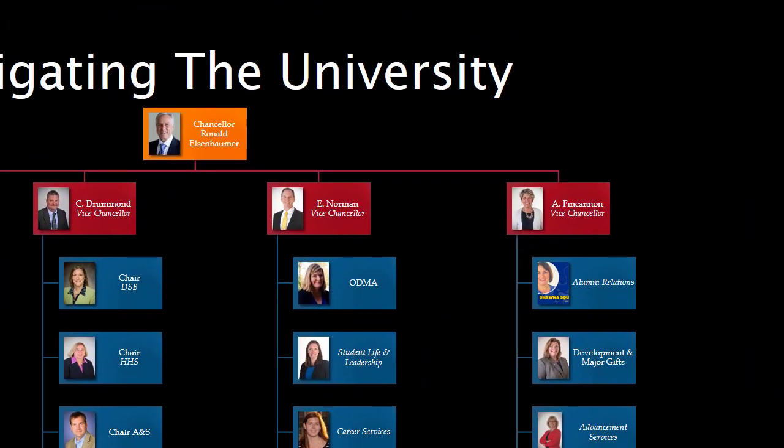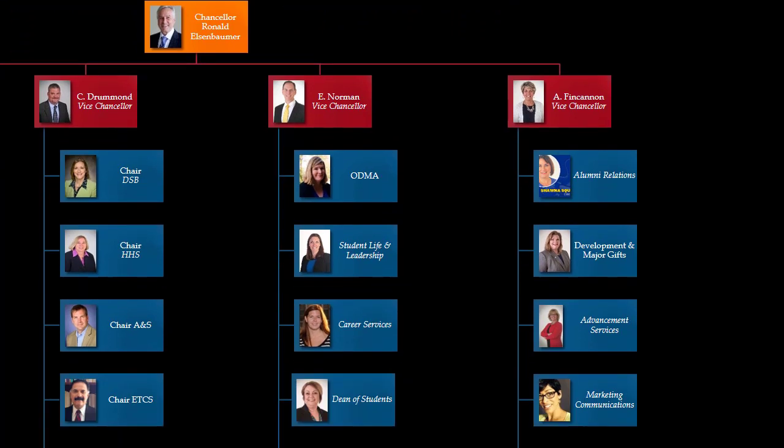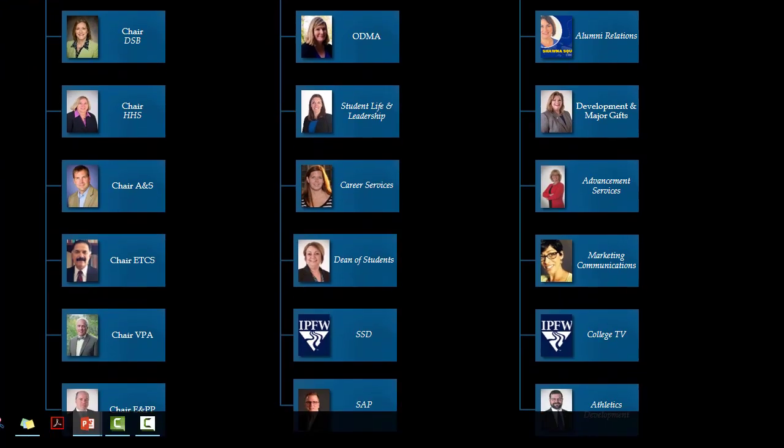The third area is under the Vice Chancellor for Student Affairs, Dr. Eric Norman, who is also called the Dean of Students. The offices in his area exist to provide services to you, the student, to help you be more successful and get the most out of your college career. This includes support services such as tutoring, services for students with disabilities, the Office of Diversity and Multicultural Affairs, and offices that enhance your experience such as student life and career services.